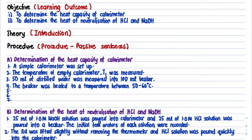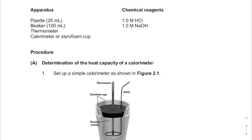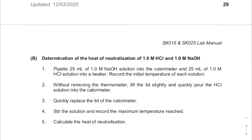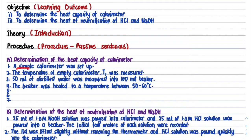Next is the procedure. For the procedure, you have to change it into passive sentences. For our experiment, we have two parts: Part A and Part B. I have changed it into passive sentences and into past tense. For procedure step number one, you don't have to draw — it's a simple one. For example: 'A simple calorimeter was set up. The temperature of the empty calorimeter was measured.'